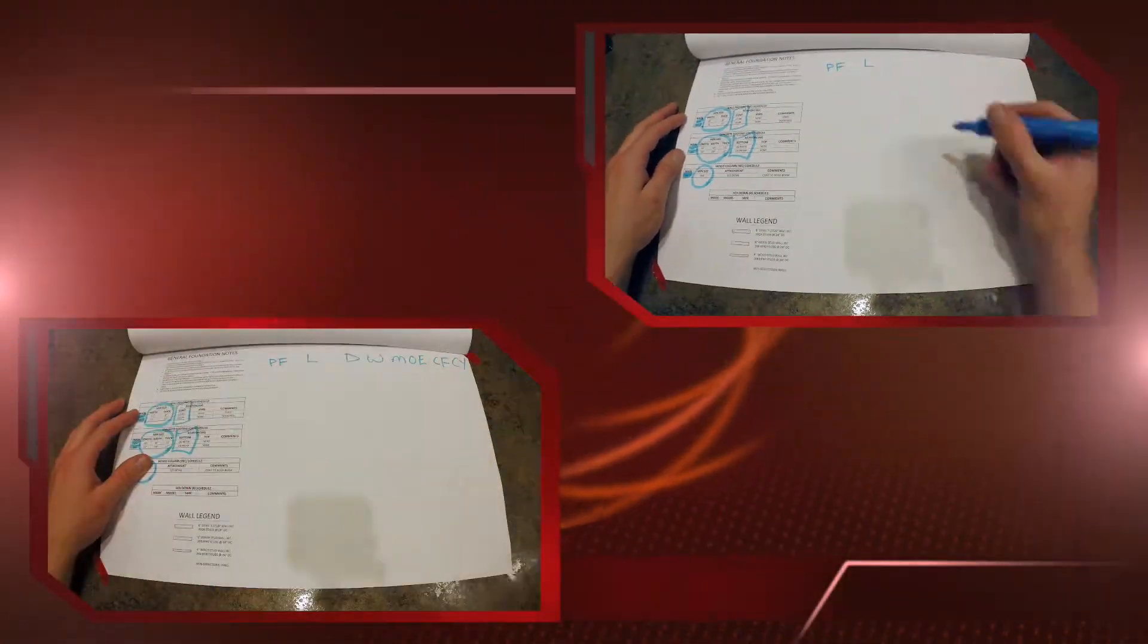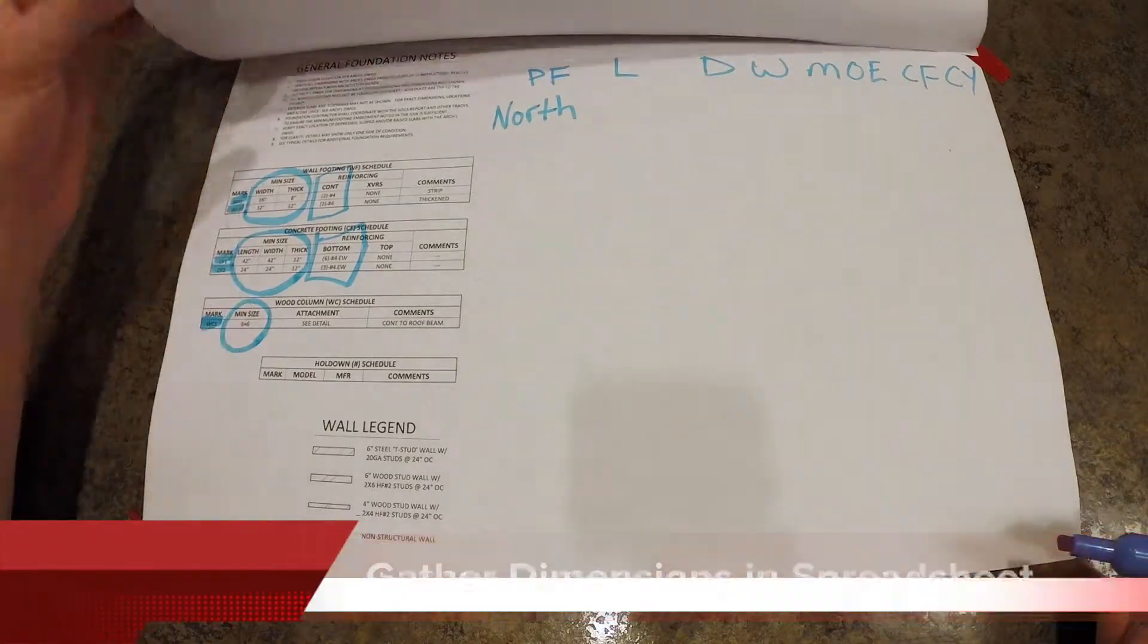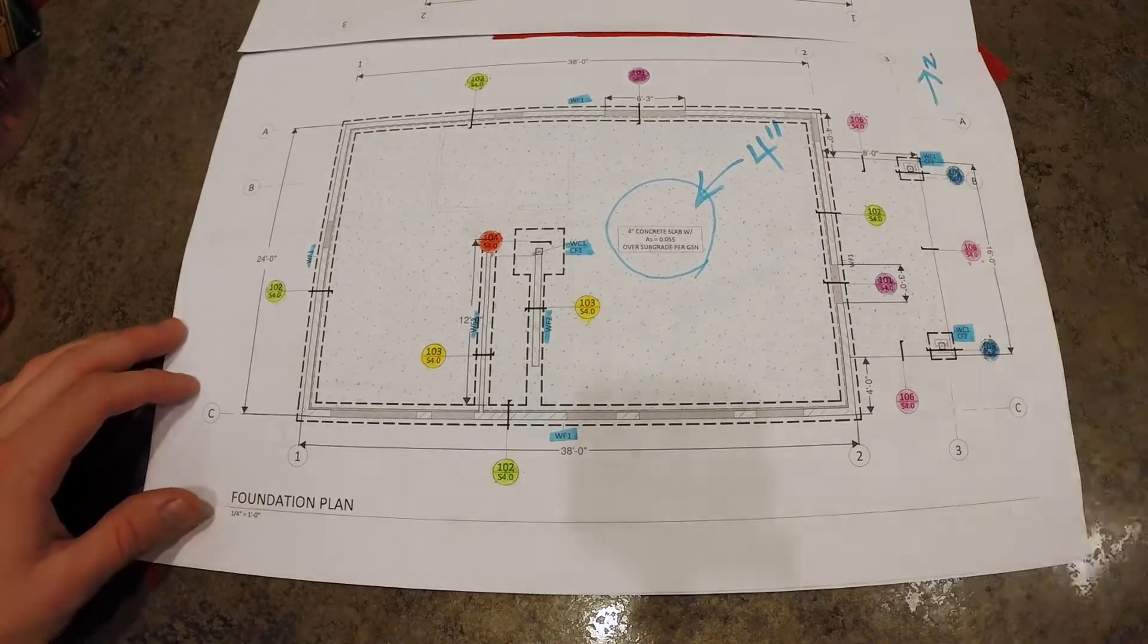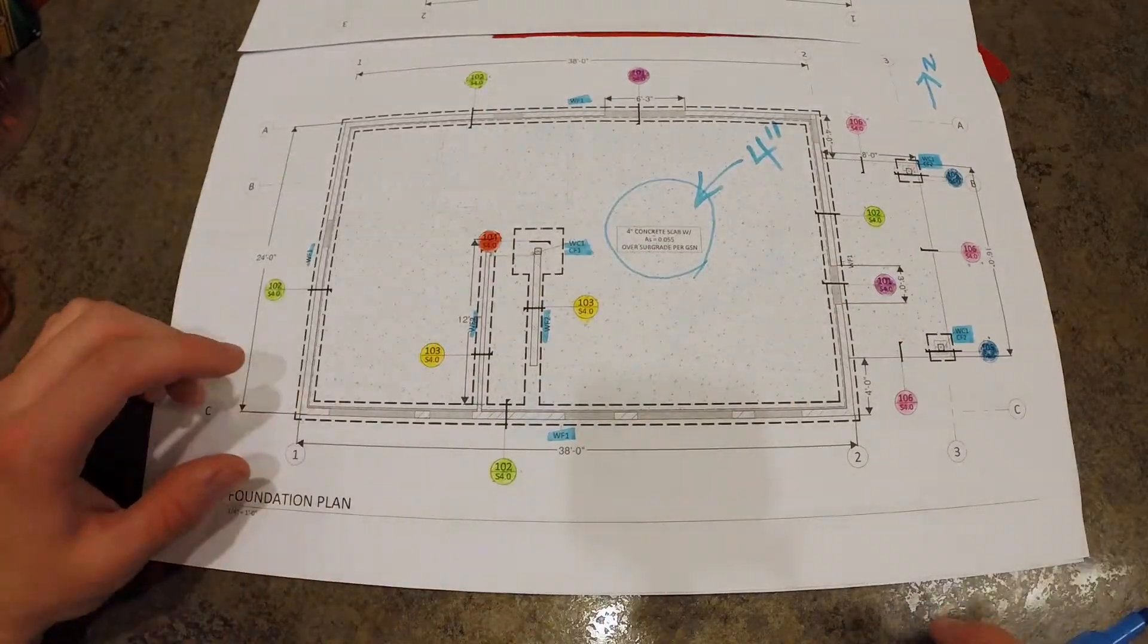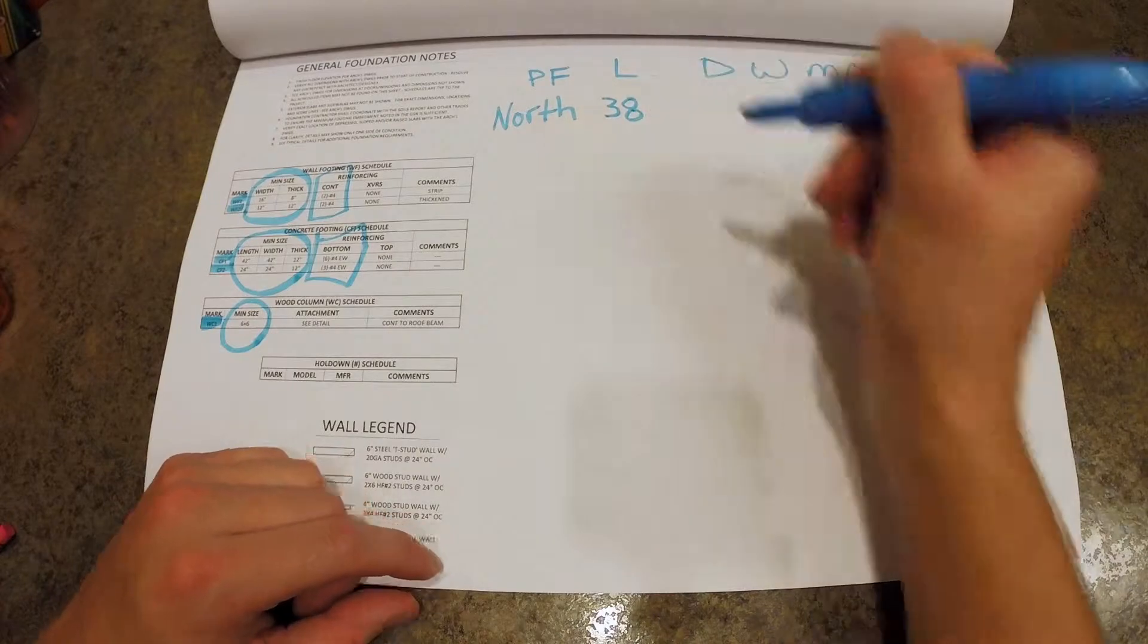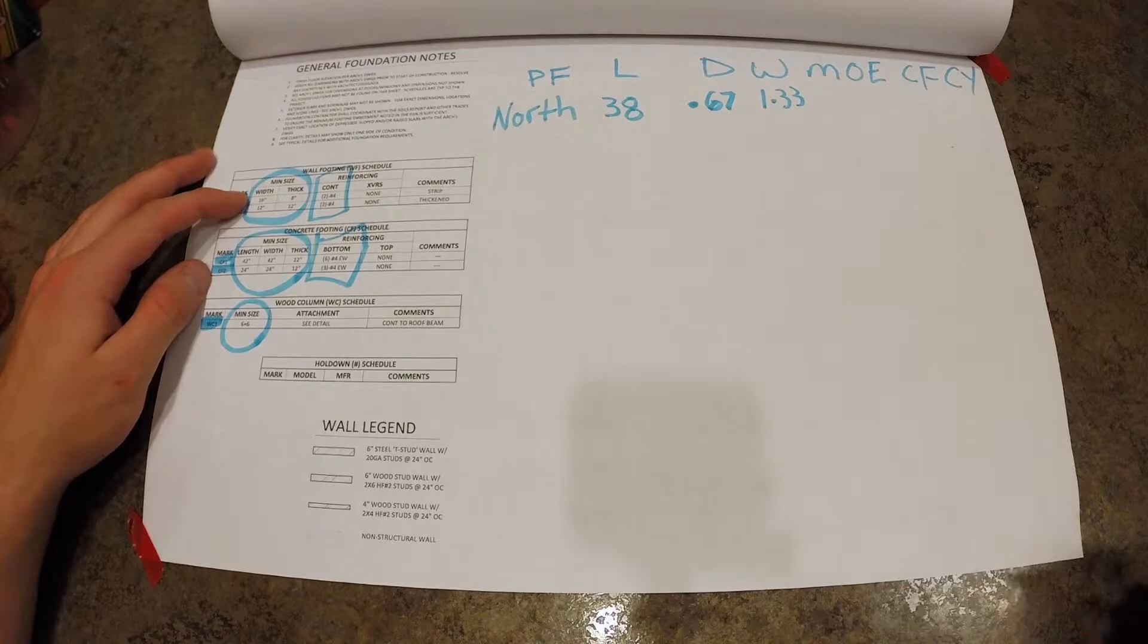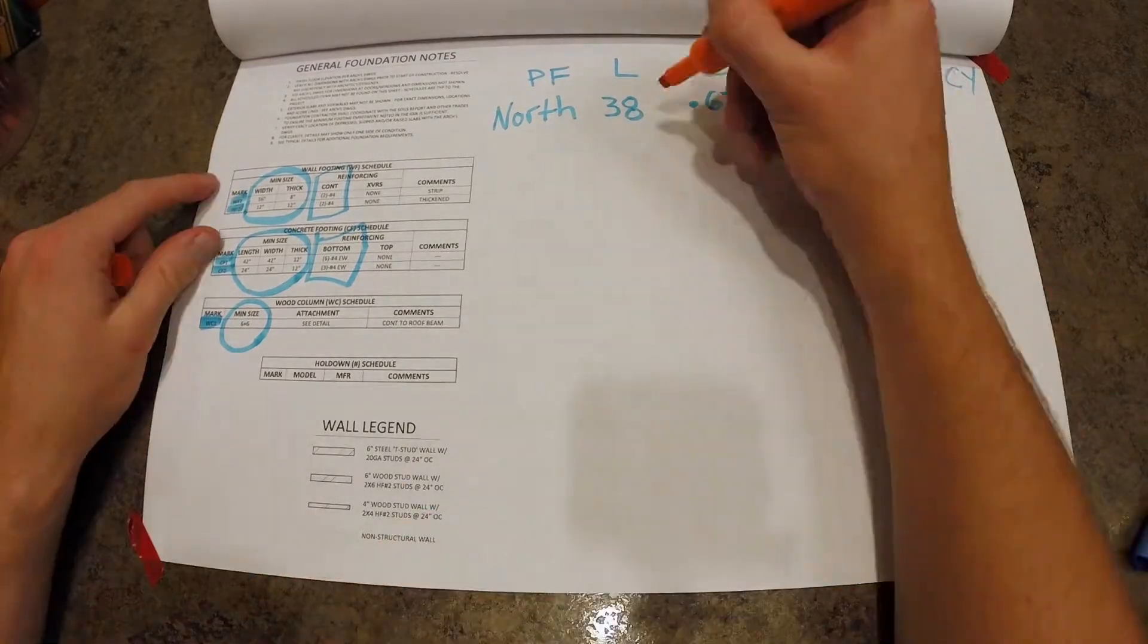So starting with perimeter footing, we have length, depth, width. We have our margin of air, and then our concrete. You can see that's the north wall, which we're going to start with. So it's got a length of 38 from our chart. It's got a depth of 0.67 and a width of 1.33. We're doing a margin of air of 10%, so that's 1.1.